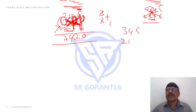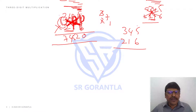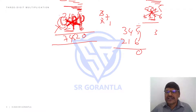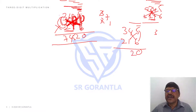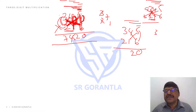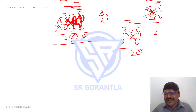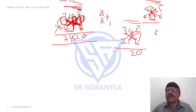3, 4, 5 and 2, 1, 6. First round — one by one I include. Step 1: 6 into 5 is 30 — 0 here, 3 carried. Step 2: two places — 24 plus 5 is 29, plus 3 carry equals 32 — 2 here, 3 carried. Step 3: three places — first and last cross multiplication. 3 into 6 is 18, 5 into 2 is 10 — 28. Plus middle 4 into 1 is 4 — 32 plus 3 carry equals 35. 5 here, 3 carried.